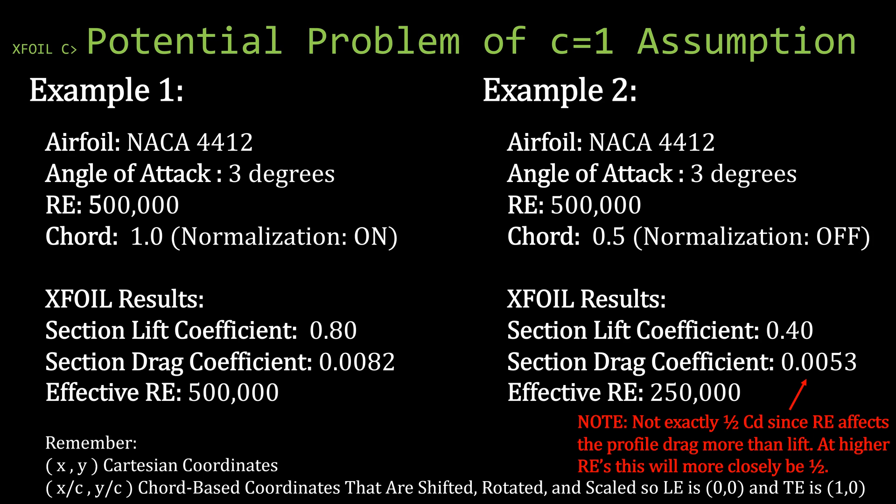In the first example, the section lift coefficient is 0.8 and the section drag coefficient is 0.0082. Because the chord was normalized to one, the inputted Reynolds number and the effective Reynolds number the airfoil sees are the same. In example two, however, the section lift coefficient and section drag coefficient are lower. The clue is the effective Reynolds number: since the chord is cut in half and chord is part of the definition of Reynolds number, even though we specified half a million Reynolds number, the flow around the smaller airfoil was only effectively seeing a Reynolds number of 250,000.